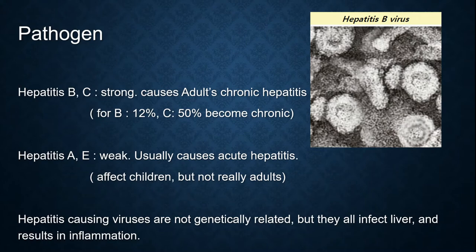The pathogens of hepatitis are the hepatitis B, C, A, and E viruses. For hepatitis B and C, they are strong and cause chronic hepatitis in adults — 12% for B and 50% for C become chronic. Whereas hepatitis A and E are weaker, usually causing acute hepatitis, and they affect children.